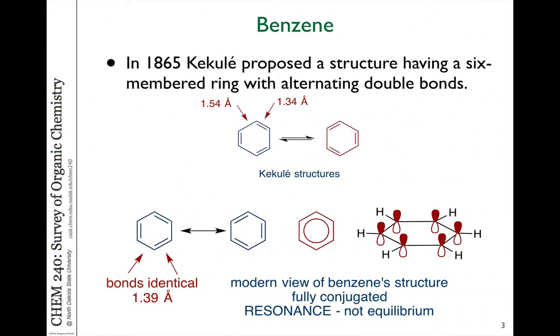It was in 1865 when Kekule proposed the structure of benzene as having six-membered ring with alternating double bonds. Six carbons in a ring with three double bonds. If you have alternating single and double bonds, you might expect those bonds to have different bond lengths. However, benzene has a structure which is completely symmetric. All the bonds have identical lengths of 1.39 angstroms, and Kekule proposed a structure that has those double bonds alternating back and forth.